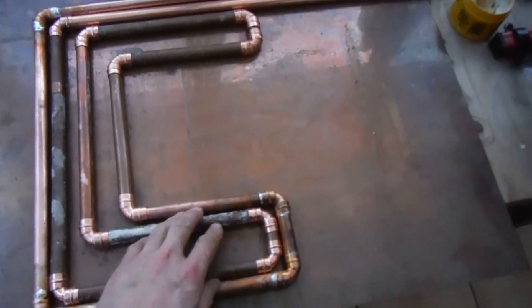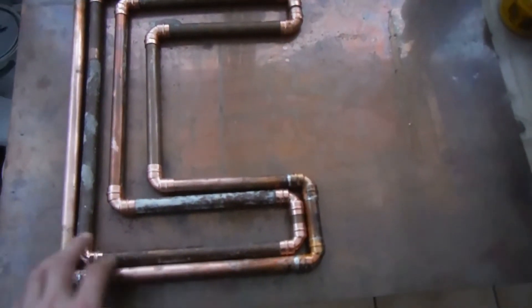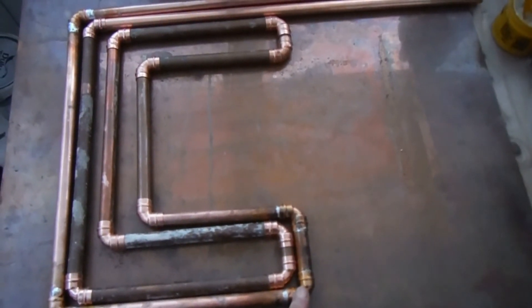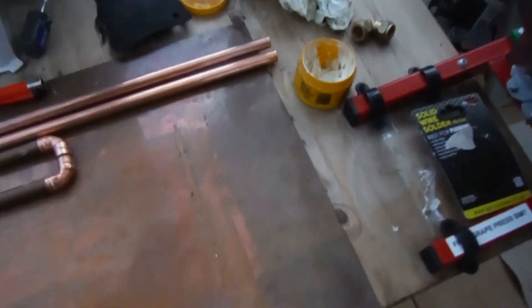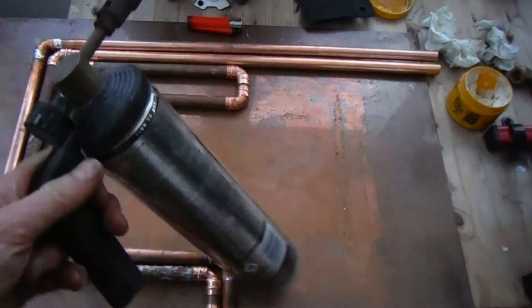So we've got all the pipes cut to the right size. Fitted it all together with all the 90 degree bends. All we've got to do is solder it all in place. I've got the solder. I've got my gas torch. So let's get cracking.